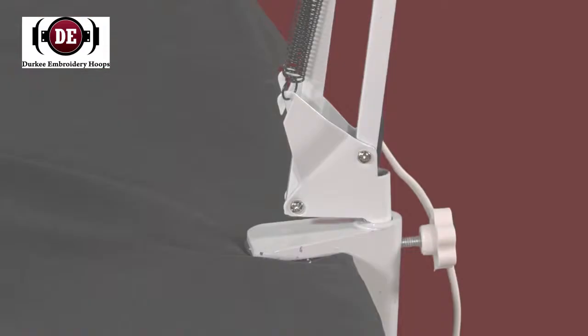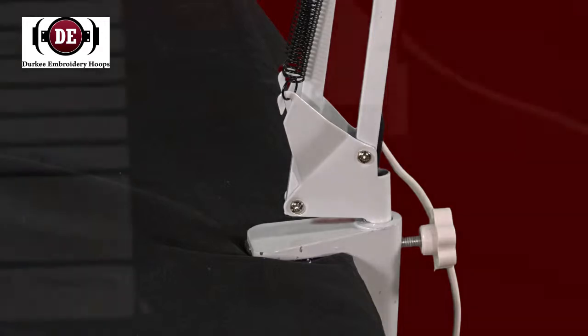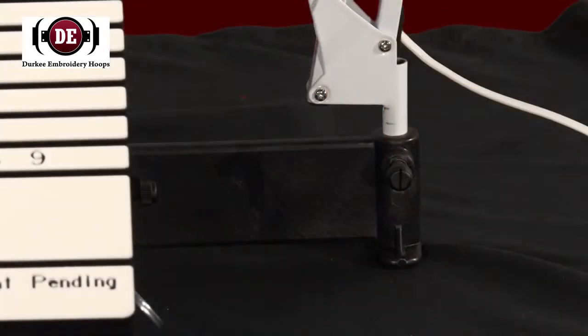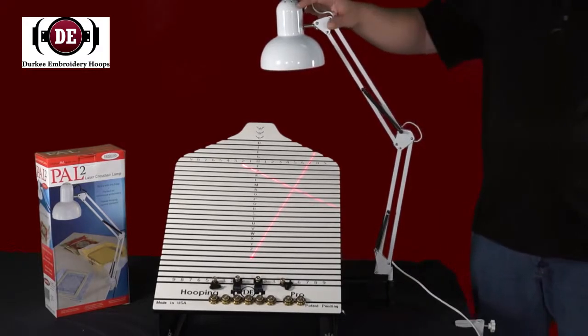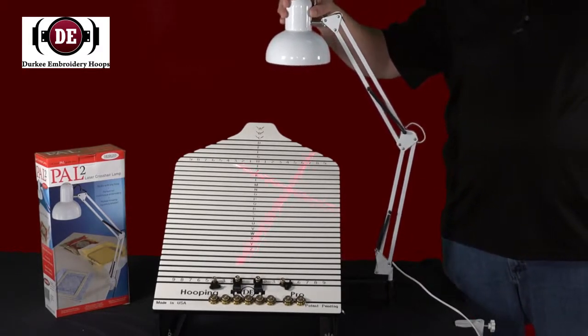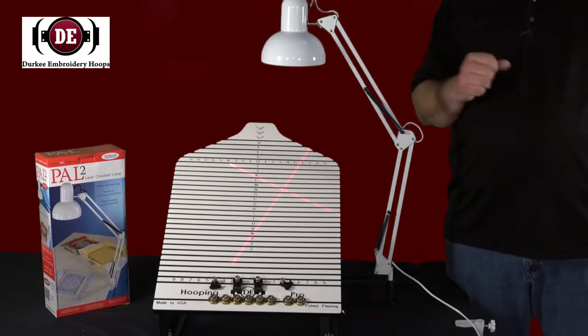The first option is a table mount. This is for stability and usually recommended by Durkee. However, if this is not an option for you, it does come with an adjustable bracket that mounts to the side of your hooping station, so you can easily mount your light, adjust, and slide forwards and backwards. It's an accessory to help you find that center mark that you use to mark your material to start your embroidery hooping process.